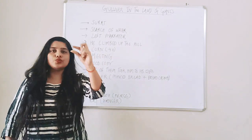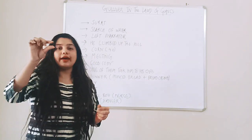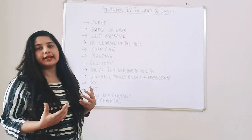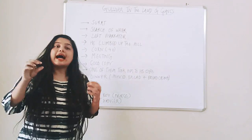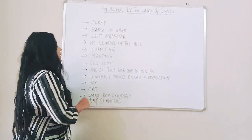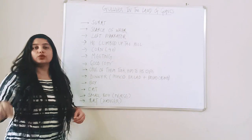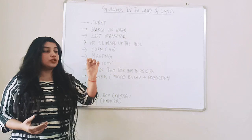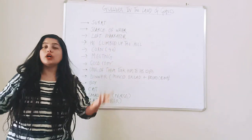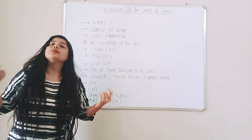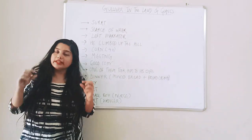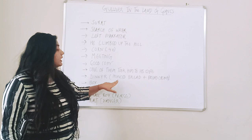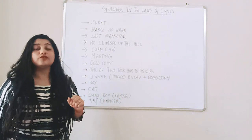Gulliver explains: 'Do not worry, I am just your friend.' He is scared that his life is in danger. He takes out a small gold coin and gives it to the giant man, saying 'Please, don't harm me.' He tries to make a bond. The giant returns the coin, and one of the four giants takes Gulliver back to his wife. When Gulliver enters the family home, the wife is shocked — 'Oh my god, what have you got? Such a small creature in our land of Giants!'